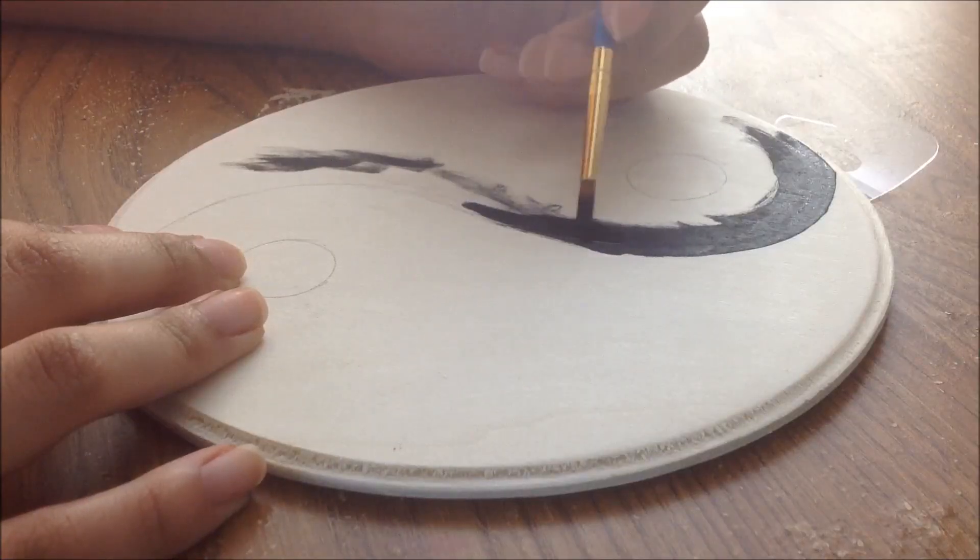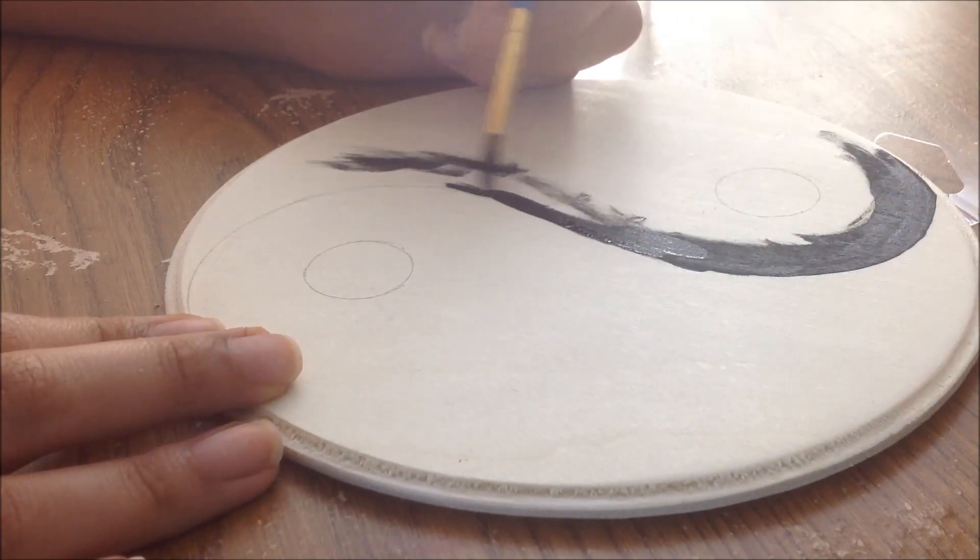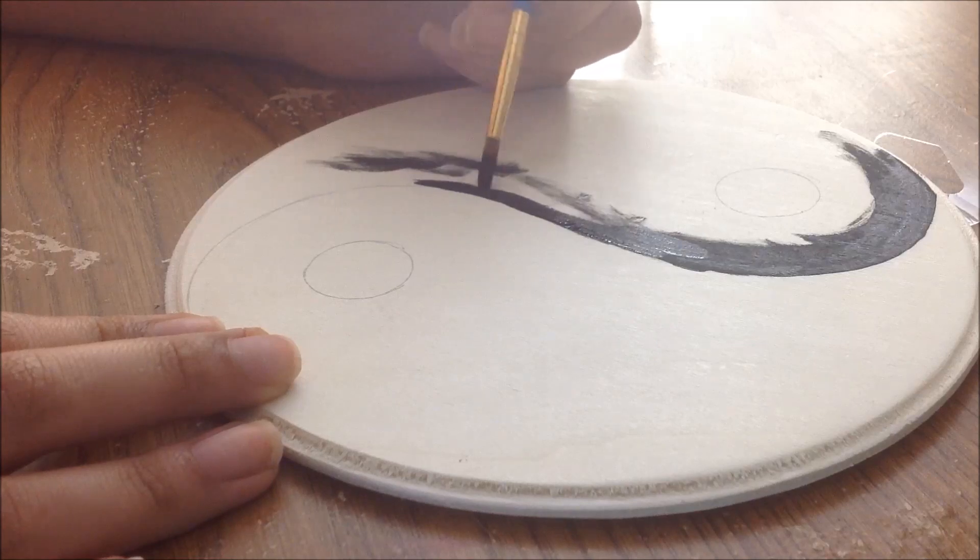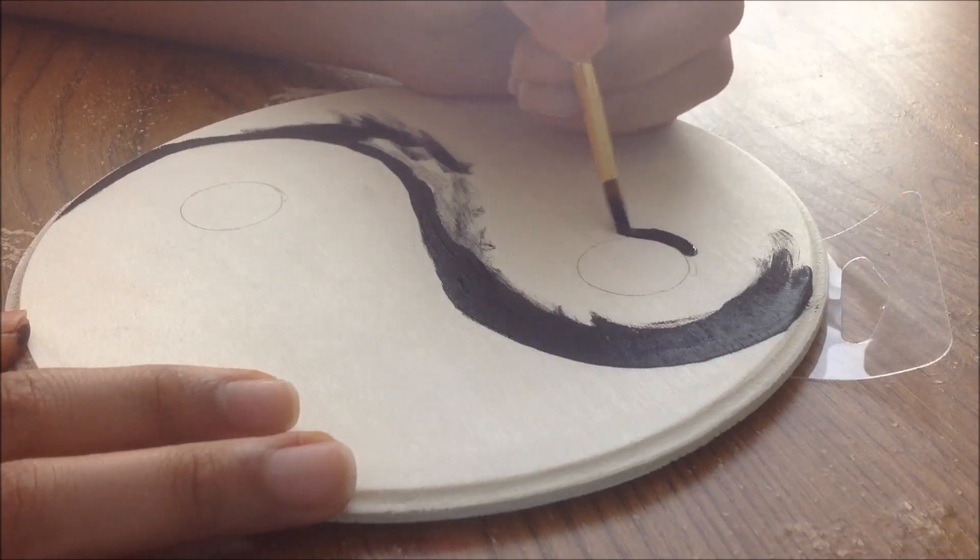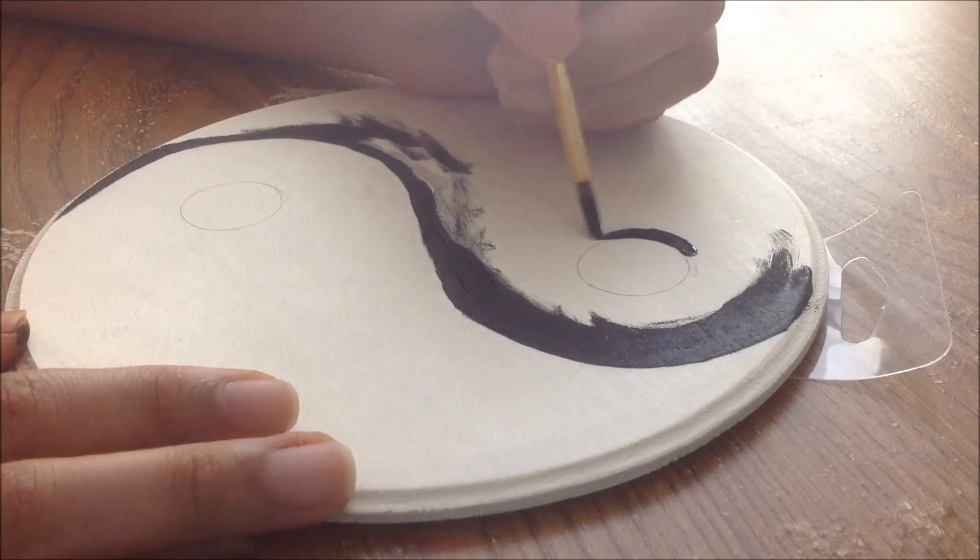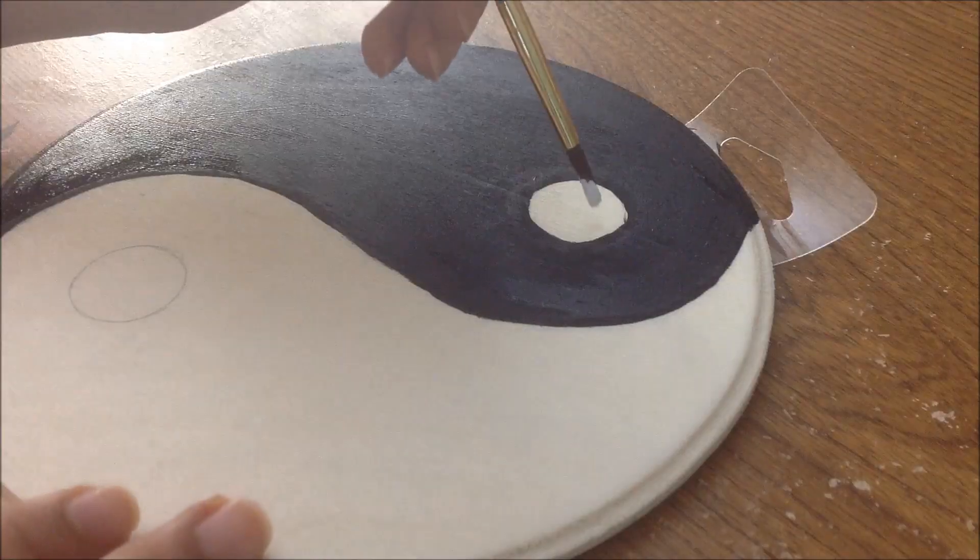And now it's time to start painting. A pro tip is to always paint out the outlines and then fill it in. This will help you make less mistakes and it really helps you bring out the vibrancy of the yin and the yang. And the same thing I'm doing with little circles within the yin and the yang. I'm painting out the outlines and then coloring it in.